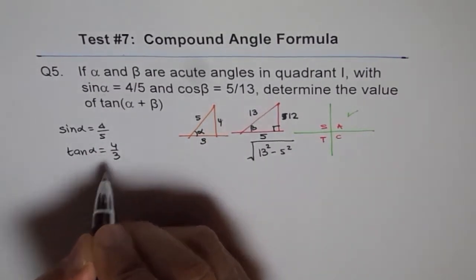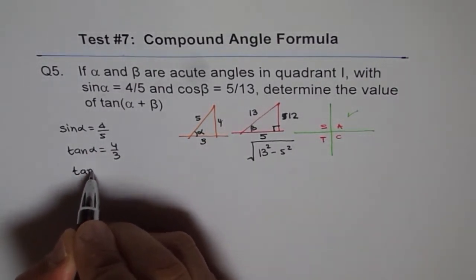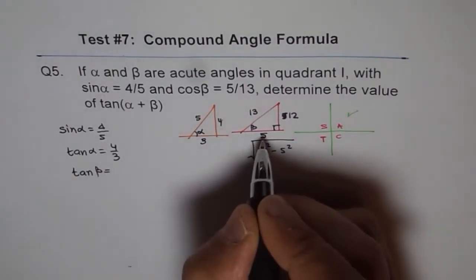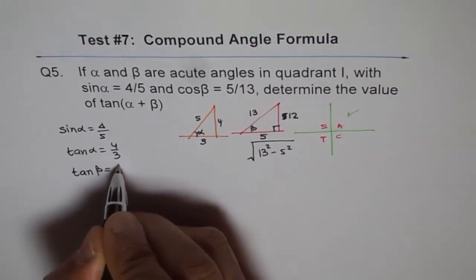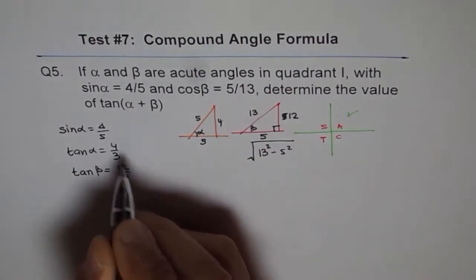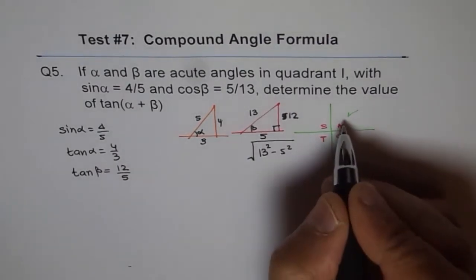4 over 3. How about tan β? So tan β is equals to 12 over 5. 12 over 5. All are positive since they all are in quadrant 1.